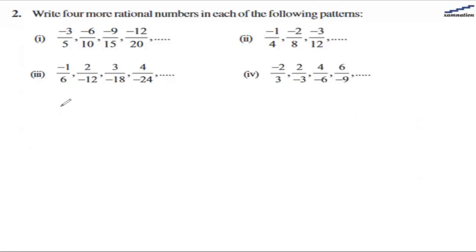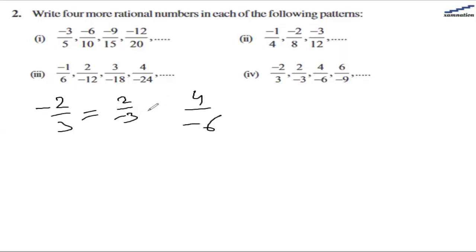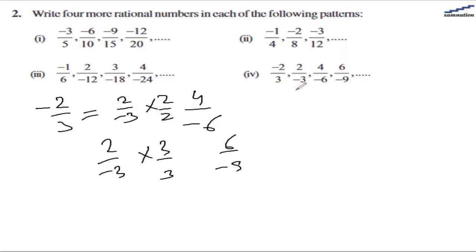Let us go to the 4th part and see if we can find the pattern. We have -2/3, which is the same as 2/(-3) — we just shifted the sign from numerator to denominator. For the third term, 4/(-6), we are multiplying the second term by 2/2. Multiplying the second term by 3/3 gives 6/(-9). So starting from the second term we multiply by 2/2, 3/3, and so on.